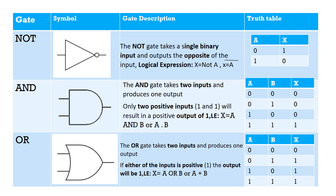There are three basic types of gates: NOT gate, AND gate, and OR gate. NOT gate is usually represented with its standard symbol, AND gate is represented like this, and OR is this. NOT is the only gate which takes only a single binary input and outputs the opposite of the input. That means if you give it 0, it will give 1, and if you give it 1, it will give 0. We usually represent NOT with a BAR. We can write x equals to NOT A as a logical expression.